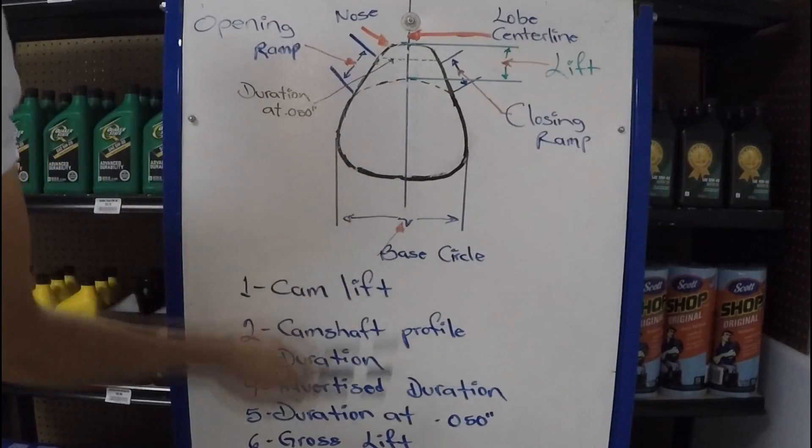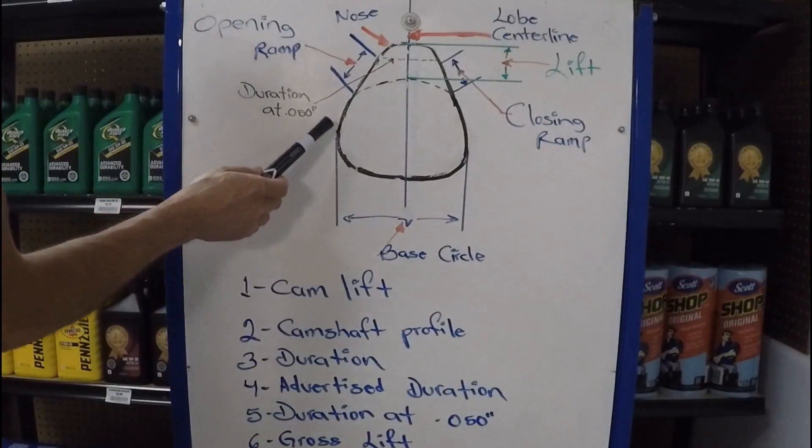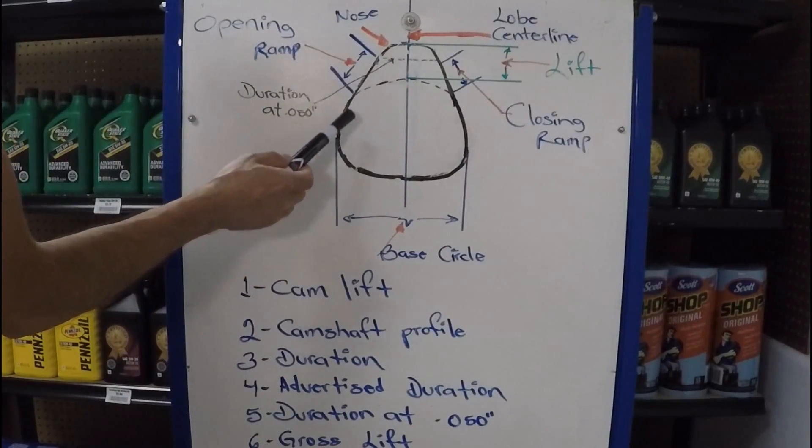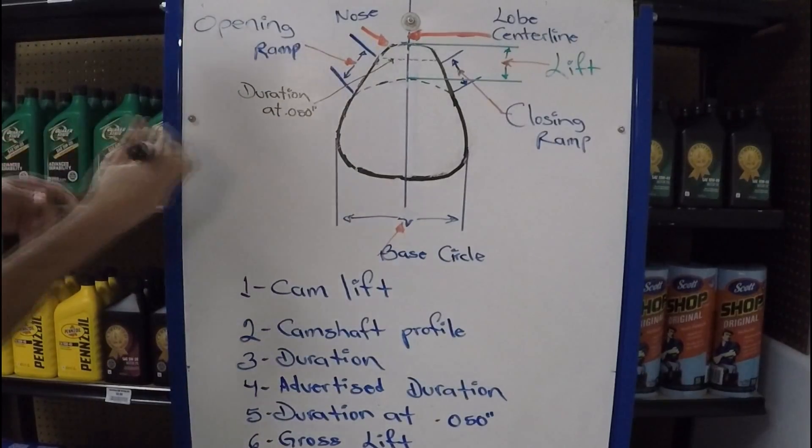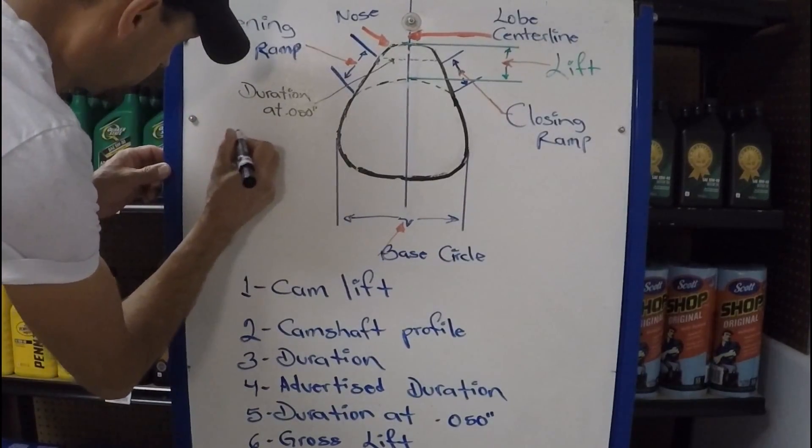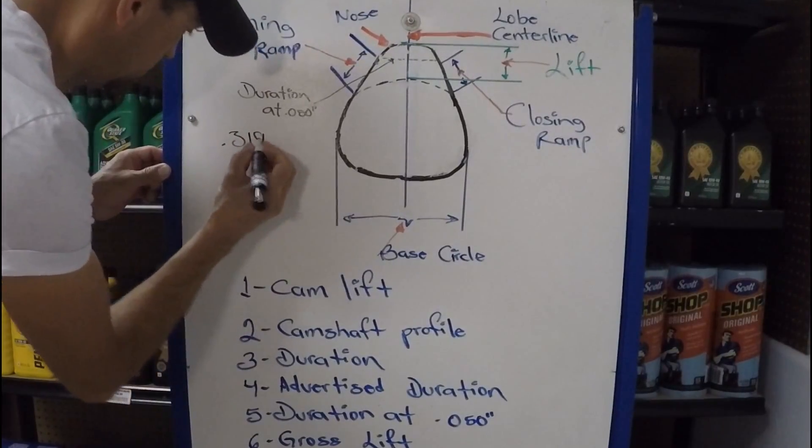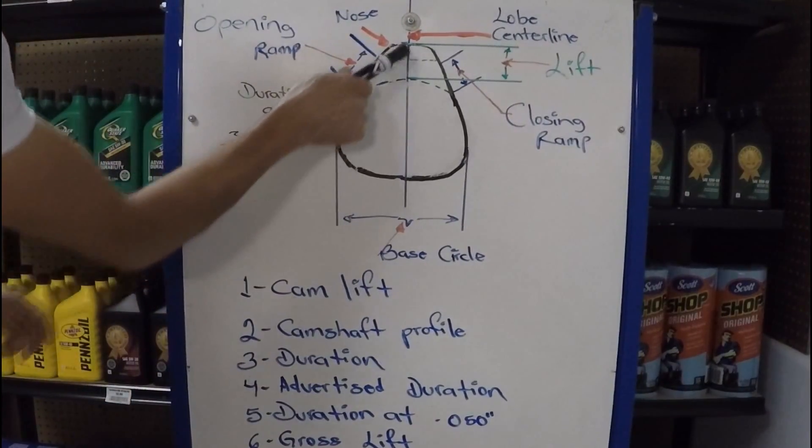And last but not least, gross lift. Engines that have rocker arms, the overall lift is going to be multiplied by the rocker arm ratio. So, for example, let's say that we have an engine with 319 thousandths of an inch of camshaft lift.